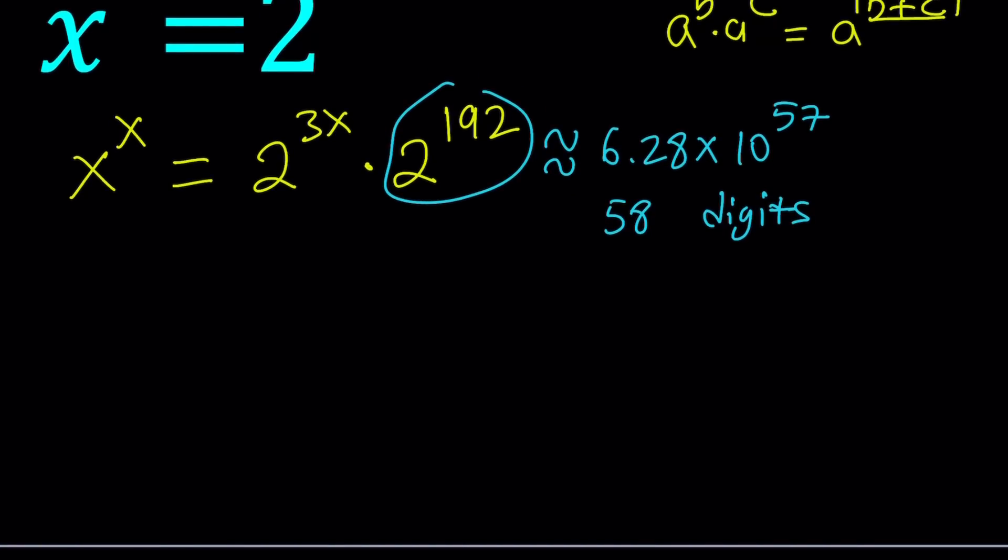For that purpose, I'm going to write 2 to the power 3x as 2 to the power 3 to the power x, and that will be 8 to the power x. So now we have x to the power x, and I'm going to divide it by 8 to the power x.